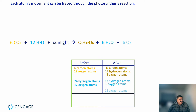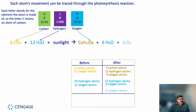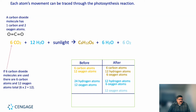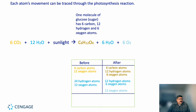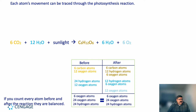Each atom can be traced back to the photosynthesis reaction. The letter C is an atom of carbon. We have six carbon dioxide molecules, 12 water molecules, plus sunlight. A carbon dioxide molecule has one carbon and two oxygen atoms, so six CO2 molecules contain six carbons and 12 oxygens. A water molecule has two hydrogens and one oxygen, so 12 water molecules contain 24 hydrogens and 12 oxygens. The sunlight provides energy, and one glucose molecule has six carbons, 12 hydrogens, and six oxygens — all atoms are balanced.